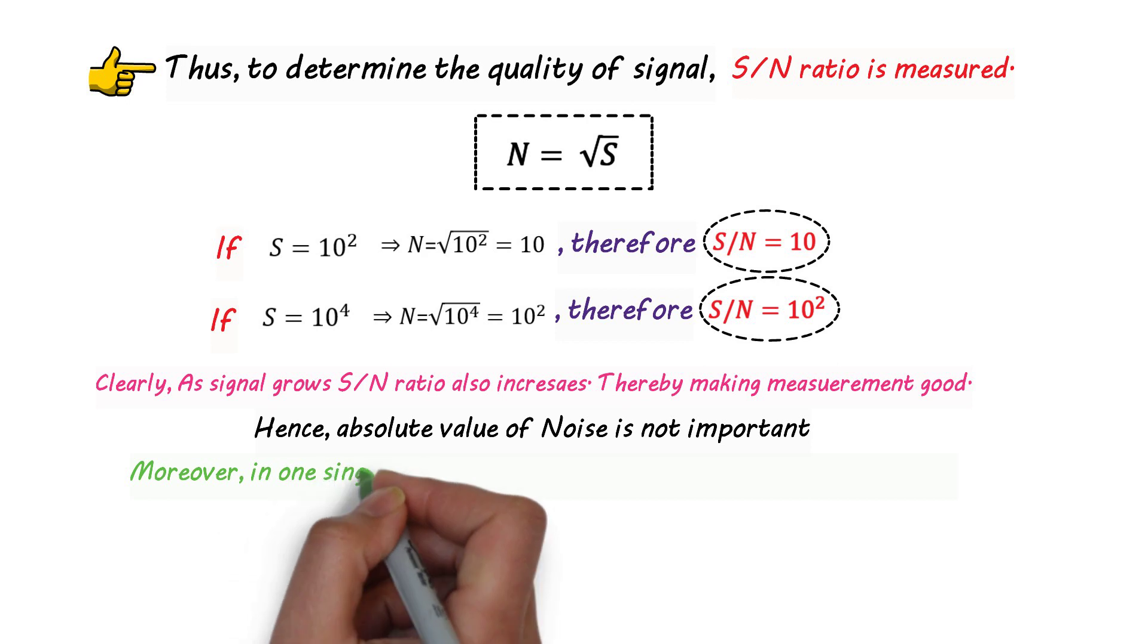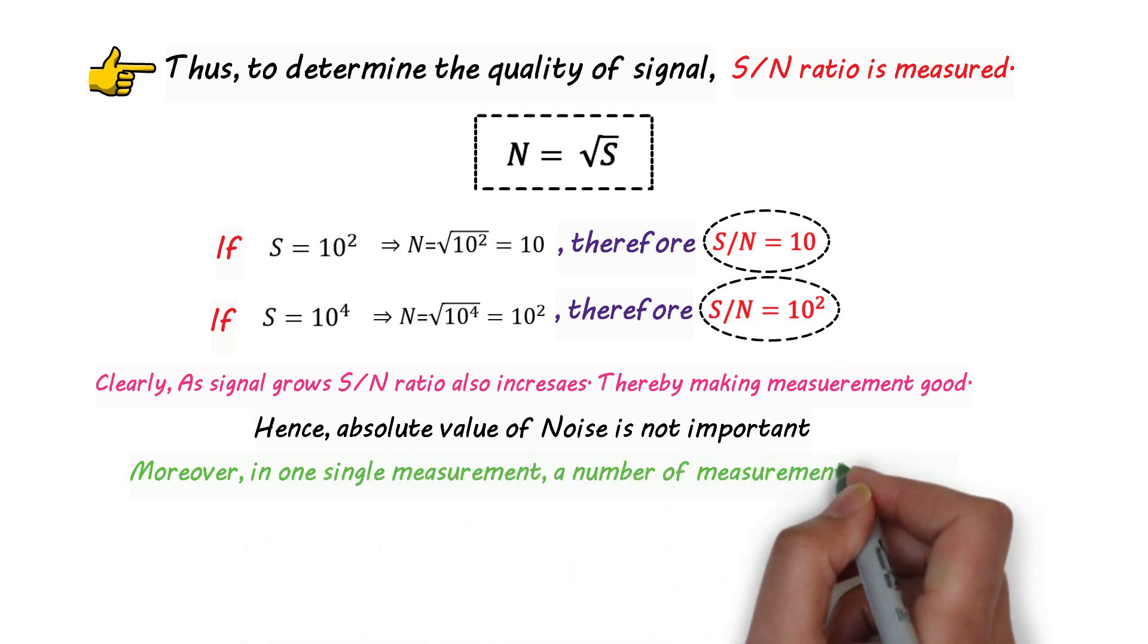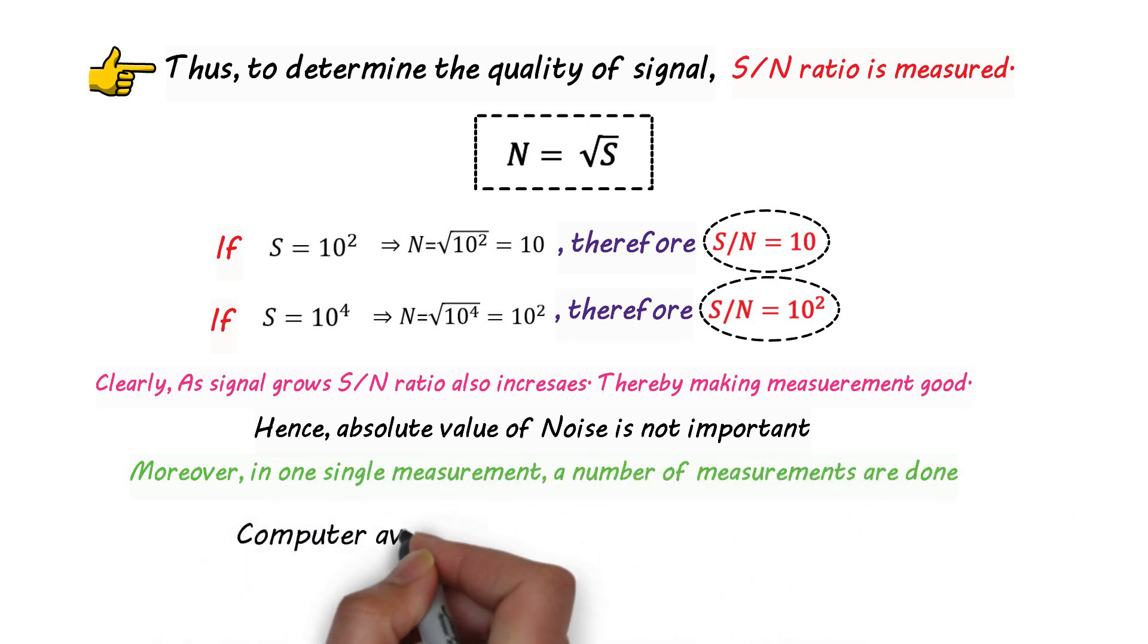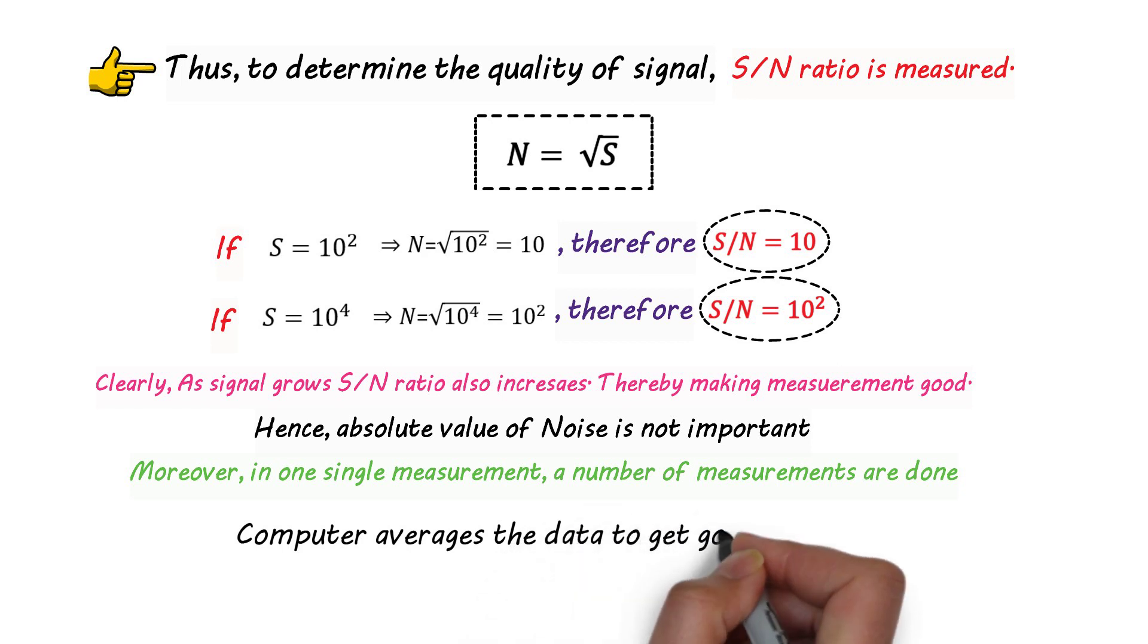Moreover, in one single measurement, a number of measurements are done by the machine. The computer averages the data to get a good signal-to-noise ratio, thereby making a better spectrum.